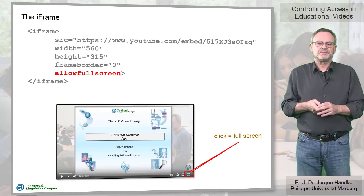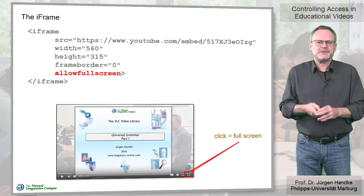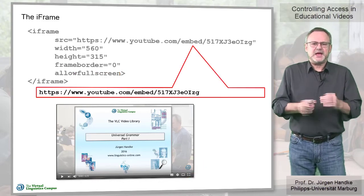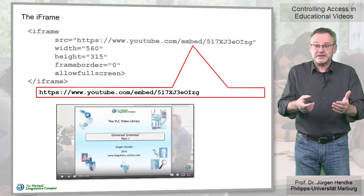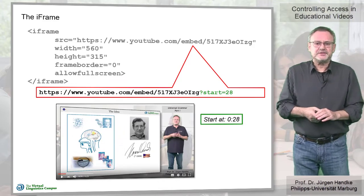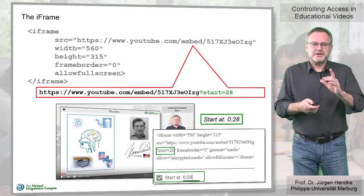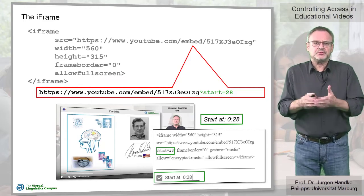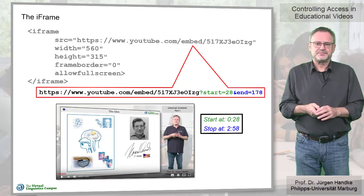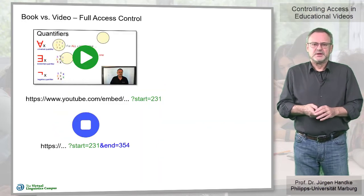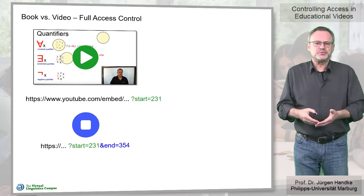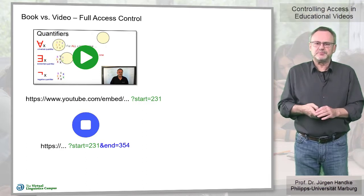If we want to allow full screen mode, we can include the allowfullscreen attribute without further values. To control video access, we have to expand the value of the source attribute. The embed URL appears automatically and the start time in seconds can be defined interactively. However, if we want to define the stop time too, we have to add it by hand and define the time in seconds. With these options we can define which parts of a video are suitable for content delivery, just like we did with books.